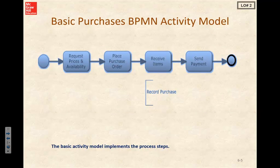Taking a look at how that translates to an activity model, we have our start, then we've got our vendor request price and availability, our place of a purchase order, the receipt of items. Then we would record the purchase, send payment, and that would end our process for our activity model.